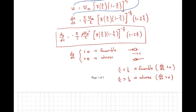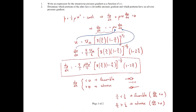To recap: in this problem the key things are knowing how to find the pressure gradient — which comes from Bernoulli's equation in the outer flow — and knowing what it means to have a favorable pressure gradient (dp/dx < 0, pressure helping push the fluid along) versus an adverse pressure gradient (dp/dx > 0, pressure working against the fluid's movement).